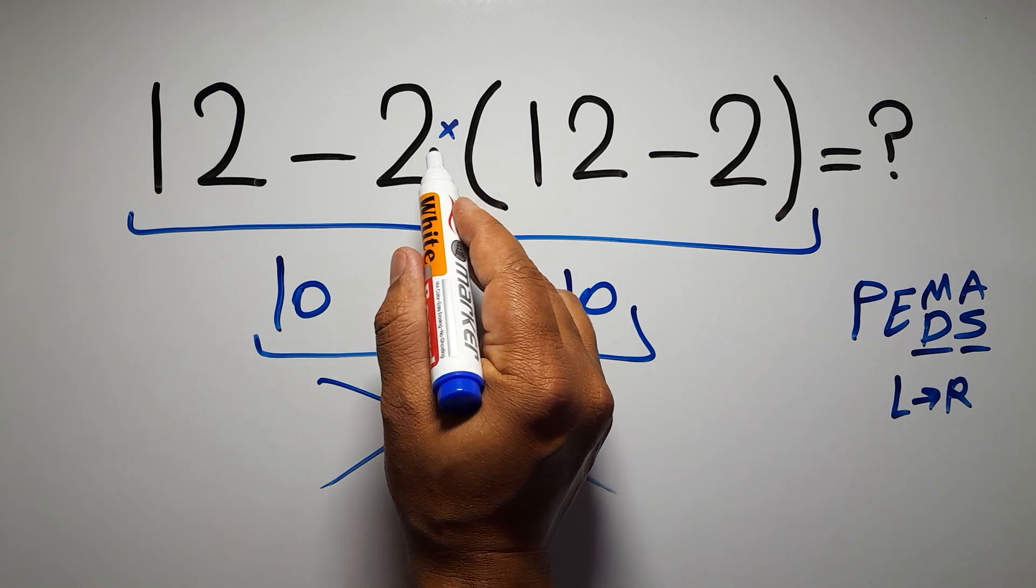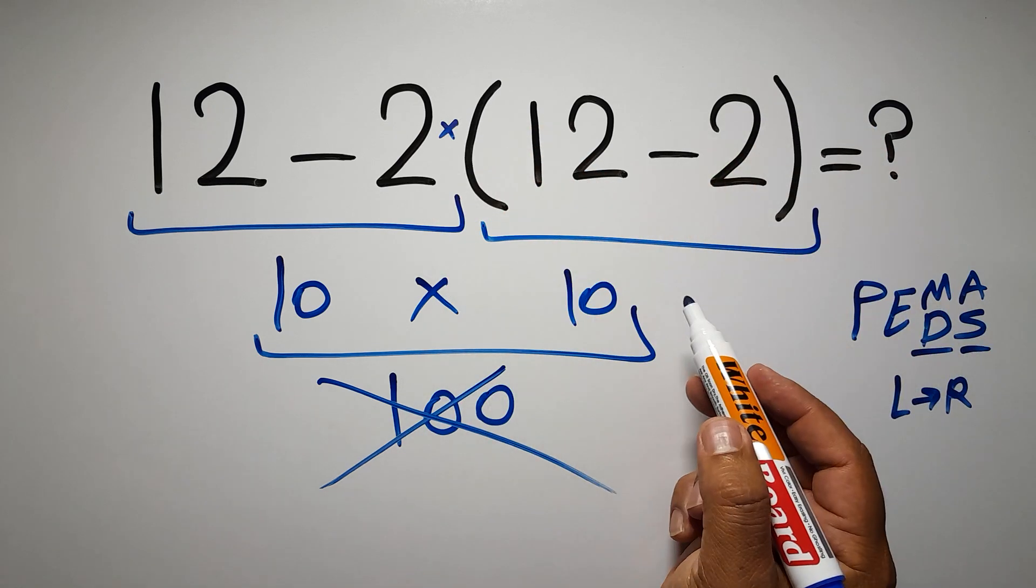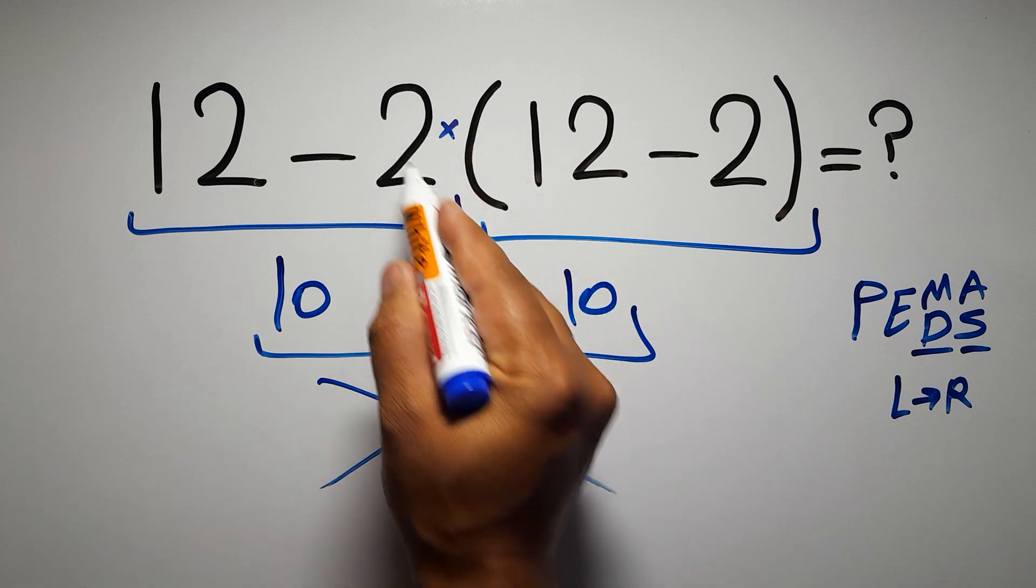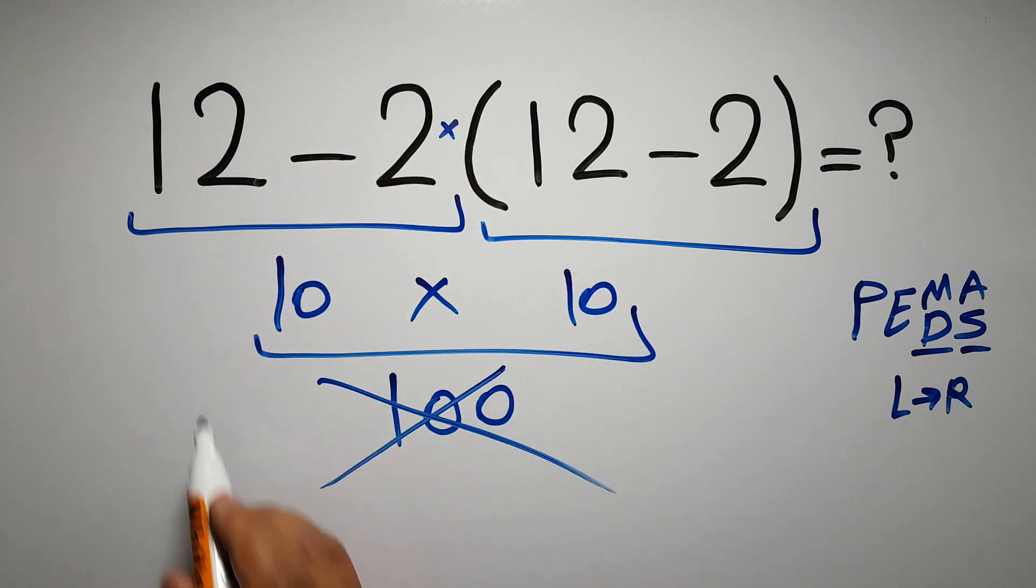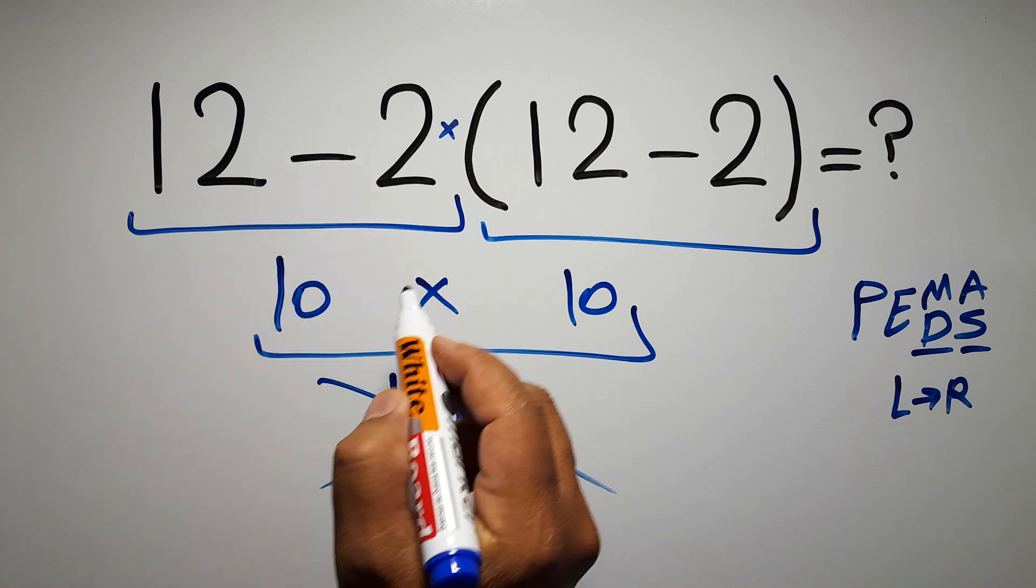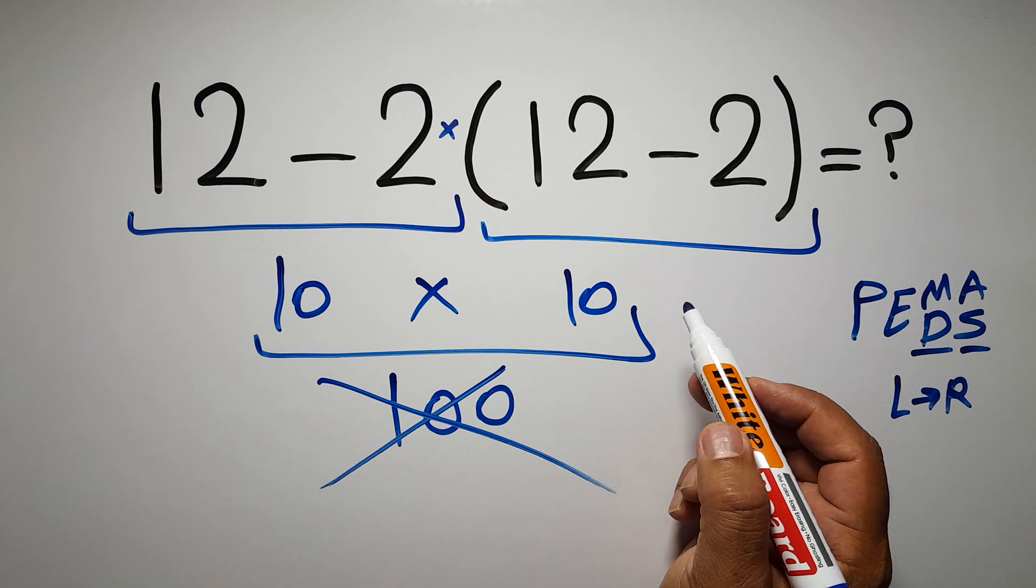So first we have to do this parentheses, then this multiplication, and finally this subtraction. If you do this subtraction before this multiplication or this parentheses, it is wrong.